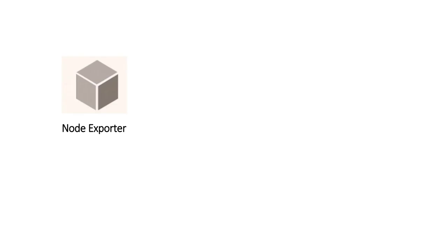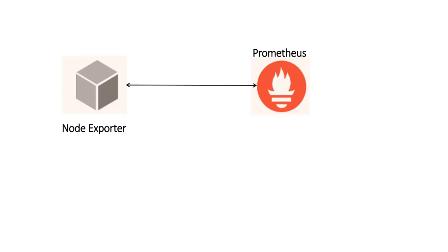Here's what we are going to build today. We will first deploy Node Exporter — it will run on the system and expose the metrics. Then we will deploy Prometheus — it will scrape and store them. And finally we will deploy Grafana — it will query Prometheus and visualize everything. It's simple, powerful, and modular, just how we like it.